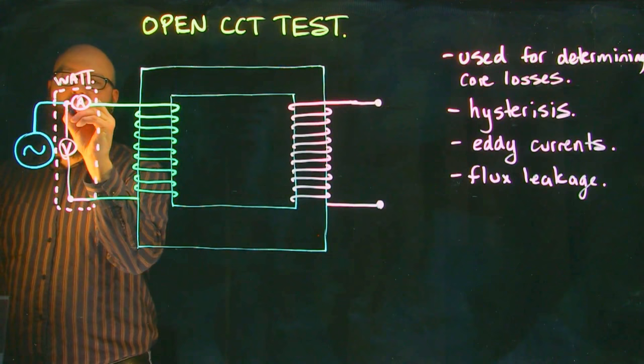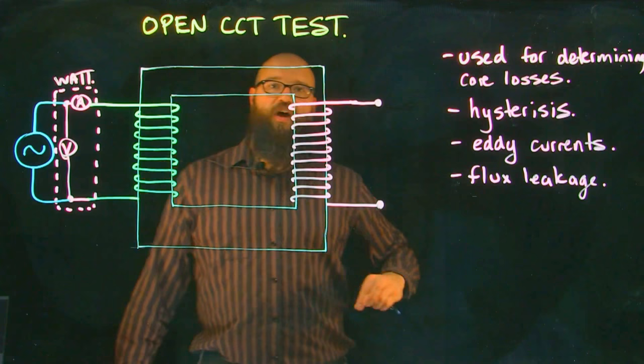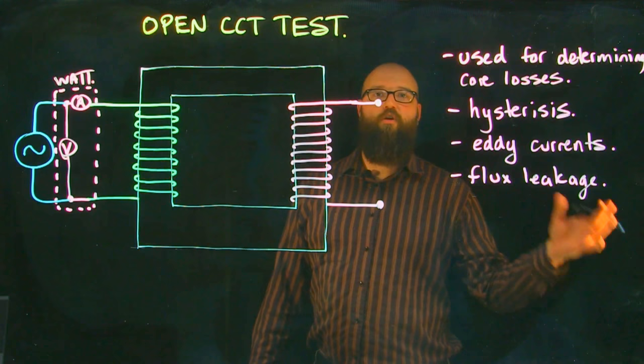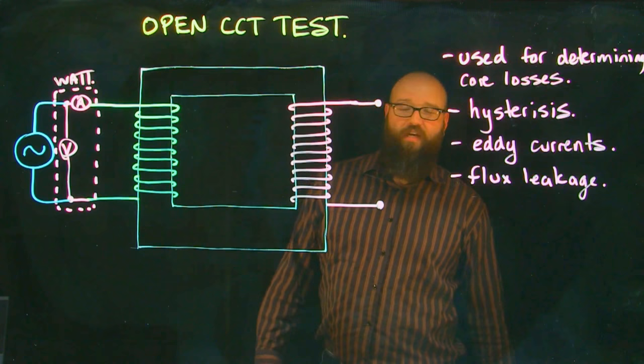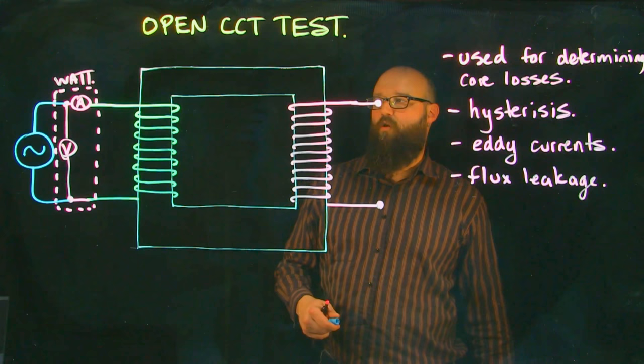So immediately when we do that, we should see some value of current flowing in the primary. That is what we call our exciting current. That exciting current is what's there to build up the magnetic fields, which inevitably gives us losses. But that's what we want to check in this transformer – what are the core losses inside.